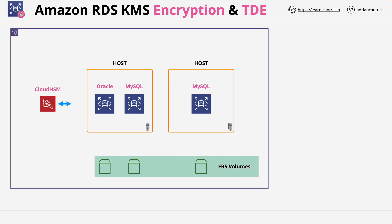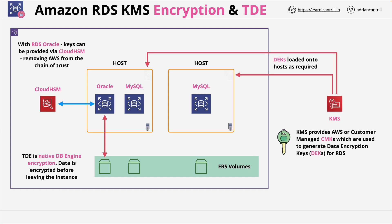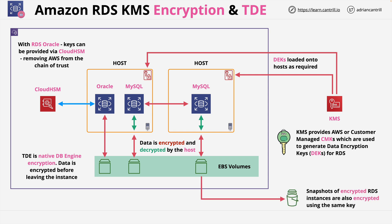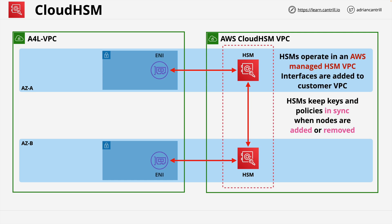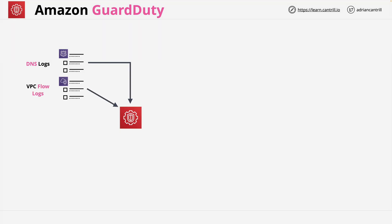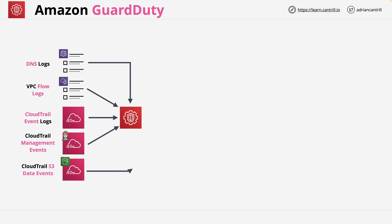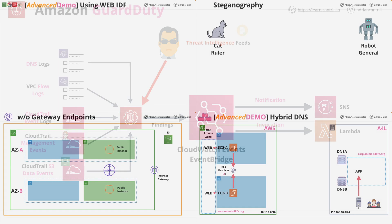Another important area is data protection, so next we'll cover how to protect data in transit and at rest within AWS. This includes how AWS manages encryption on its various products such as S3, RDS and DynamoDB, and the services AWS has for more advanced key-based cryptography such as KMS and Cloud HSM. Finally, I'll step through how to effectively perform incident response in AWS and what products can be used to assist with this.